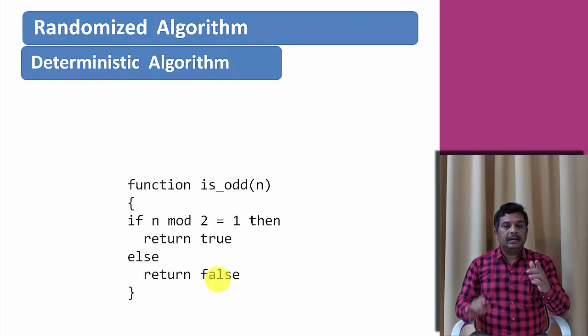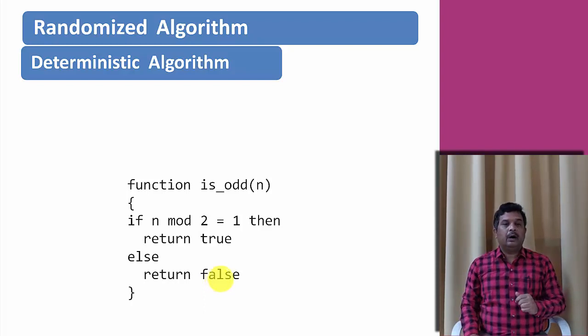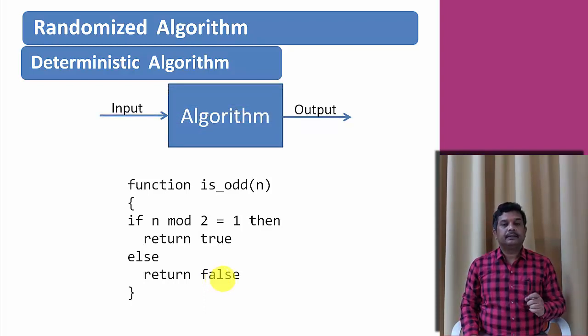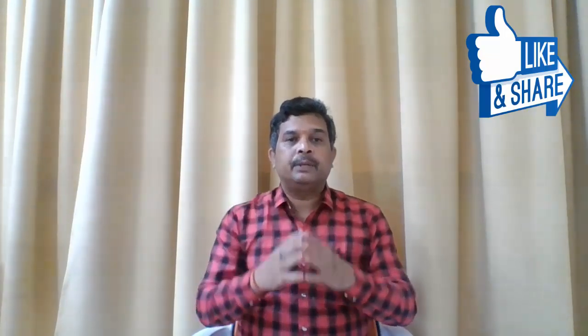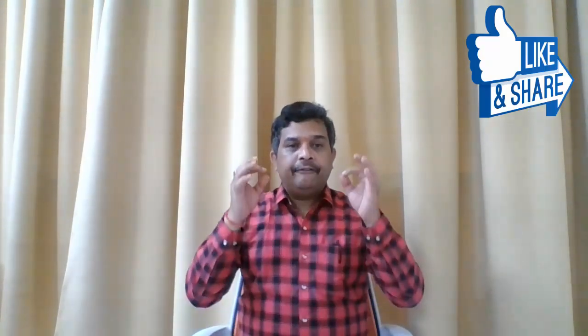So what makes an algorithm non-deterministic? A variety of factors can cause an algorithm to behave in a non-deterministic way. One factor is if it uses external state other than the input — such as user input, a global variable, a hardware timer value, a random value, or stored disk data.